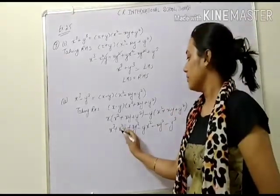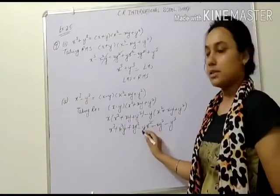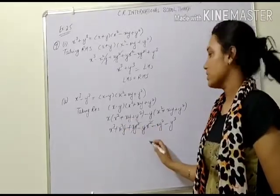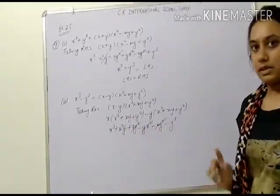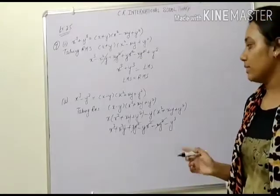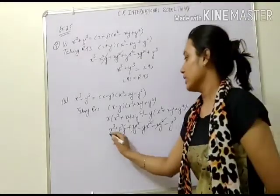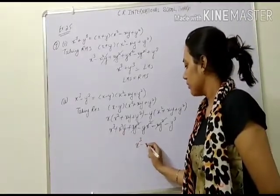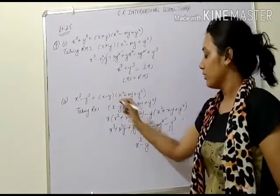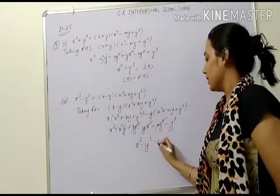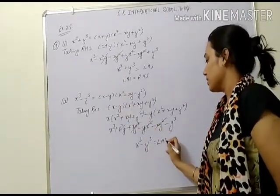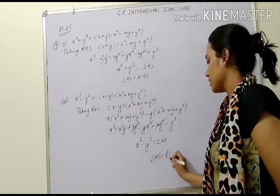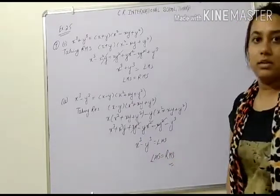x squared y and minus x squared y cancel. xy squared and minus xy squared cancel — same term with opposite signs cancel. And you will get only x cubed minus y cubed, which is your LHS. This implies LHS is equal to RHS. Hence verified.